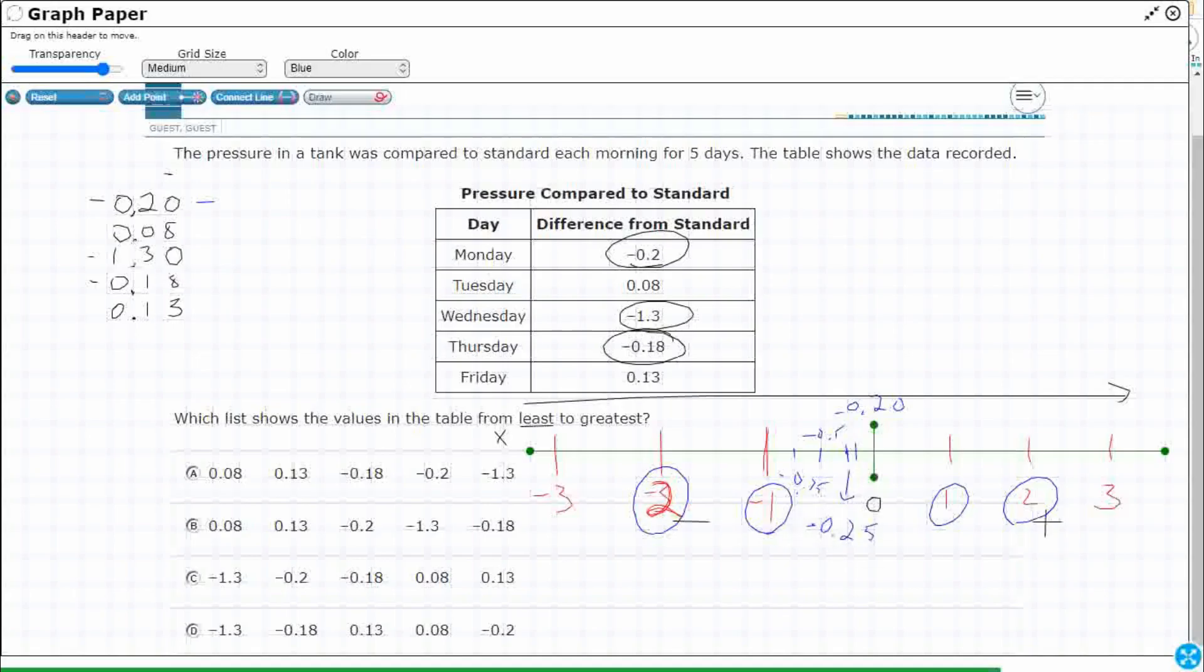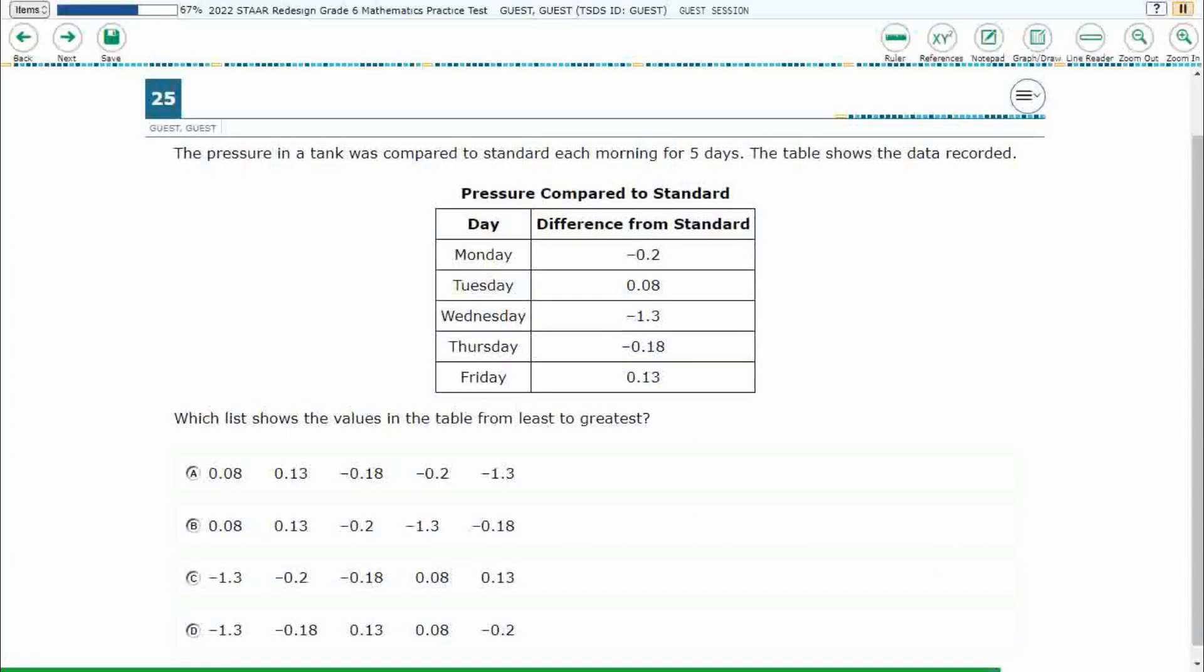So that's where my negative 20 hundredths would be. But then I've got my negative 0.18. It's going to be a little bit closer. So that 0.18 is actually closer to zero than my 0.20. And then my negative 1.3, that's way out here. And then these two become easy. We've got the 0.08 and then we've got the 0.13. So if we put all that together, our answer here is going to be C.